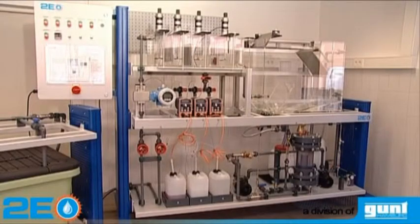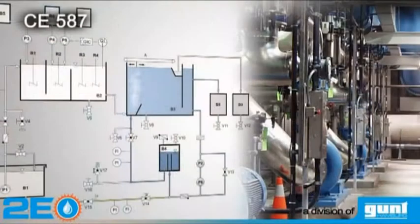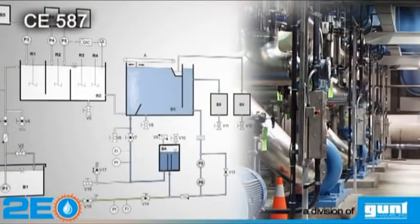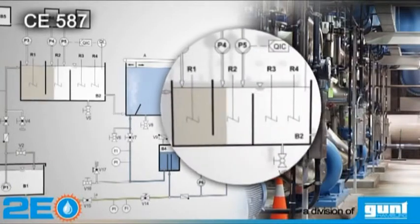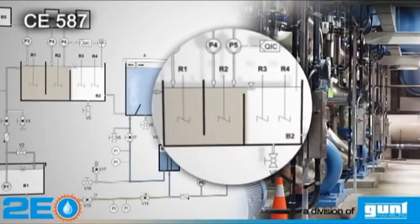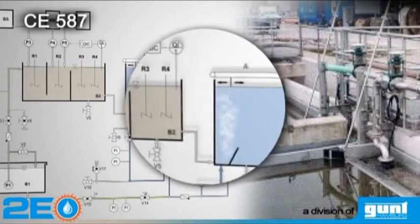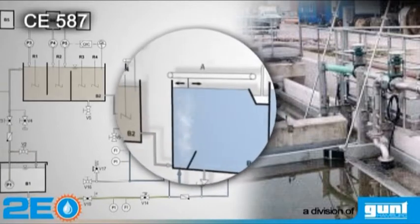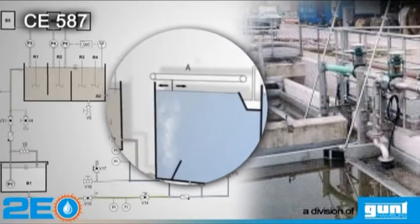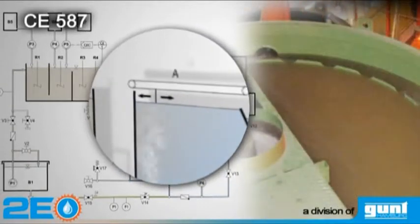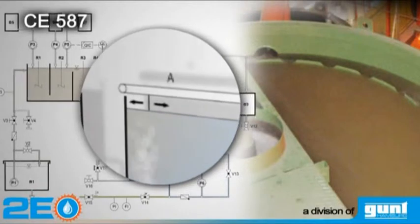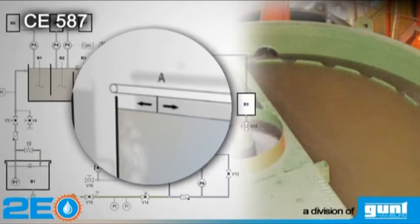The CE587 is part of our new division 2E, energy and environment. In water treatment, undissolved substances are removed by means of mechanical processes, such as dissolved air flotation. Our system, the CE587, demonstrates this process very practically.